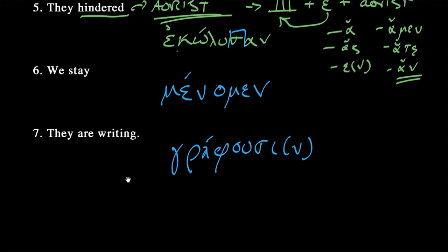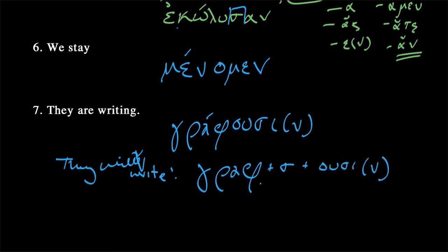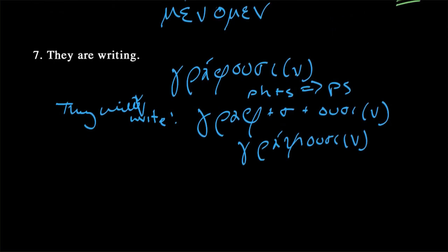Let's try all tenses for they are writing. Let's make it they will write. So, that's going to be graph plus s plus ousi. So, remember that phi, which is really P-H plus S becomes PS. So, we get graphousi. Again, the accent falls right there. So that's the future.